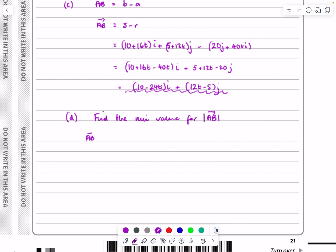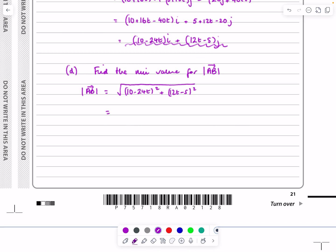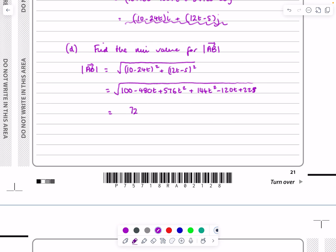What I'm going to do is find the minimum value for the length of AB. What is the length of AB? It should have come up quite a few times if you've been revising. It's using Pythagoras - that squared, that squared, square rooted. Take a little bit of time over this. Don't make a mistake trying to rush through. The first one works out to be (100 minus 480T plus 576T²). The other one is (144T² minus 120T plus 25). That tidies up to be 720T² minus 600T plus 325.